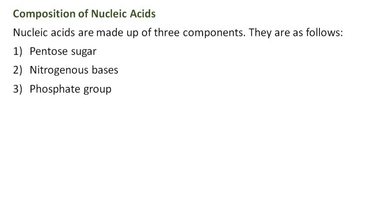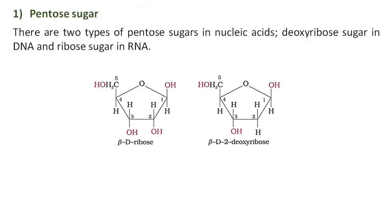The genetic information coded in nucleic acids controls the structure of all proteins including enzymes and thus governs the entire metabolic activity in living organisms. Nucleic acids are made up of three components. There are two types of pentose sugars in nucleic acids: deoxyribose sugar in DNA and ribose sugar in RNA.